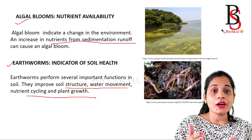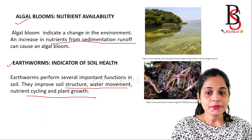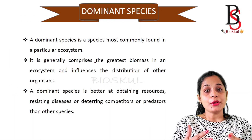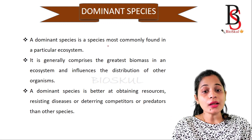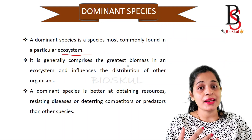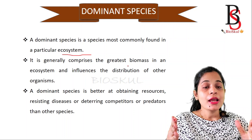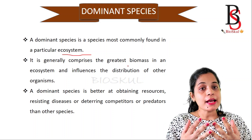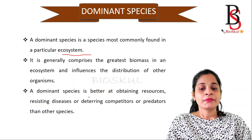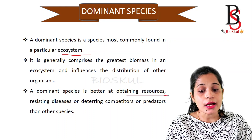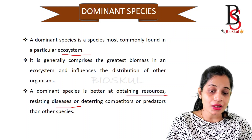Indicator species are those species which indicate the condition of the environment and the other species present in that ecosystem. The next one is dominant species. Dominant species are those most commonly found in a particular ecosystem, having the greatest biomass and influencing the distribution of other organisms. Dominant species have greater biomass compared to other organisms and are better at obtaining resources, resisting disease, and are good competitors or predators.